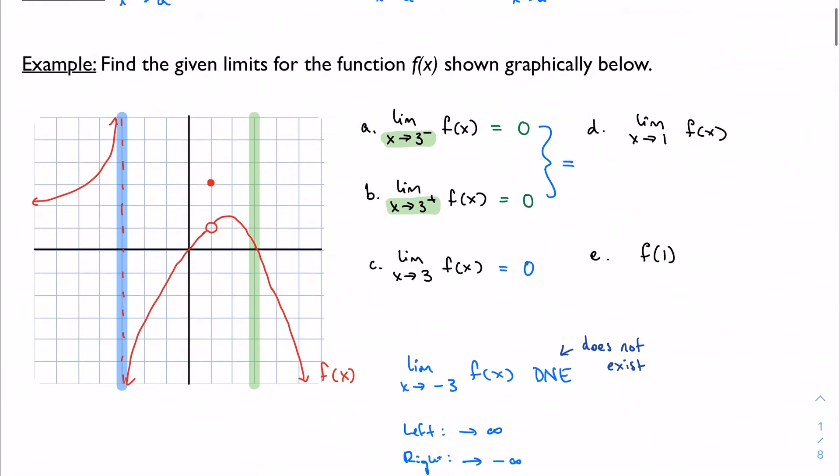One more example to prove my point from before that we don't care about what the actual function value is. Let's see what happens when I take the limit as x approaches 1. Here's 1. The limit from the left, as I approach it from the left, it looks like I'm heading toward a function value of 1. So as x approaches 1, my function value approaches 1.